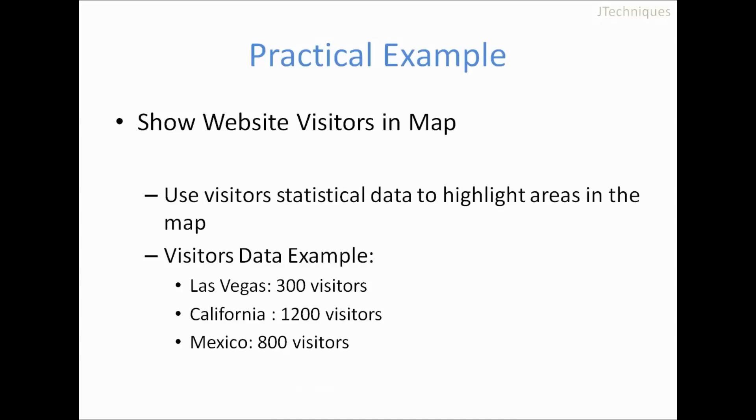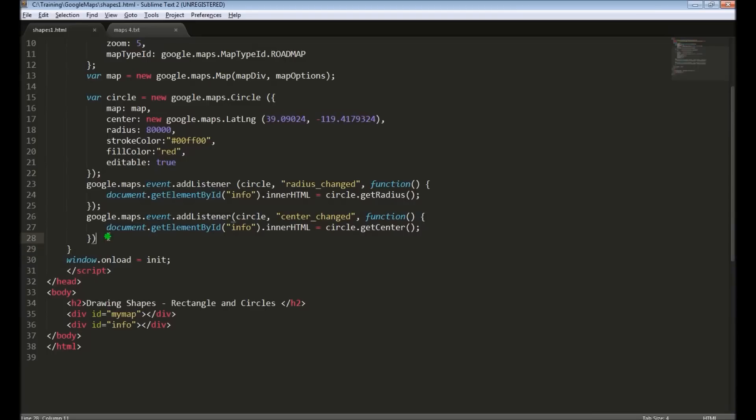Let's look at a practical example of using shapes, something like circle. Let's say we have some data about visitors of our website, and it is in city-wise. Let's say from Las Vegas we have 300 visitors every day, and California has around 1200 visitors every day. Similarly we have a bunch of data. So we can use this data to represent this data in the map using circles. Let's see how we can do that.